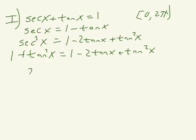The tangent squareds cancel. All we have left is 2 tangent x equals 0. Other words, tangent x equals 0.